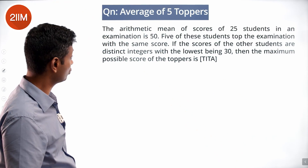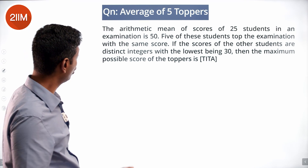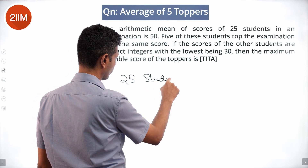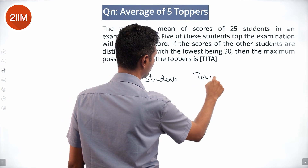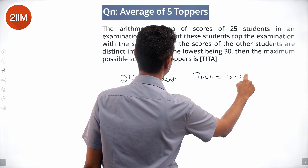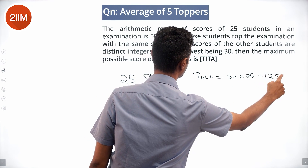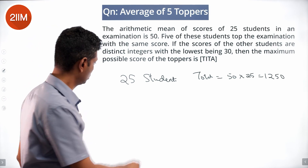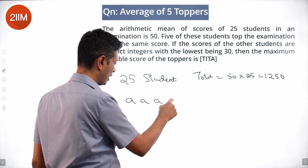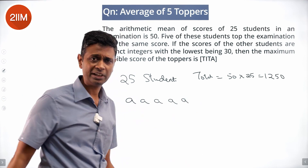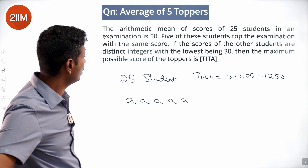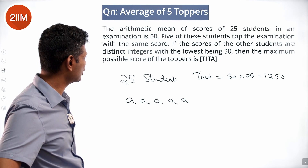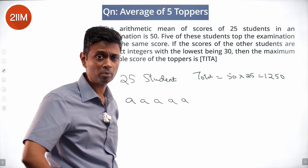The arithmetic mean of scores of 25 students is 50, so total = 1250. Five of the students topped with the same score. The scores of the other students are distinct integers with the lowest being 30. We want the maximum possible score of the toppers.